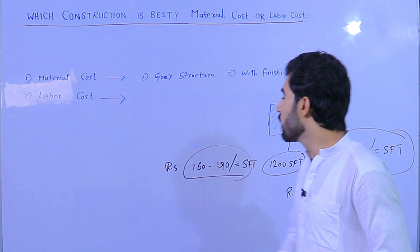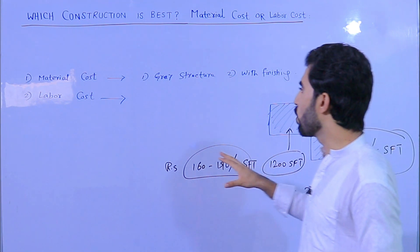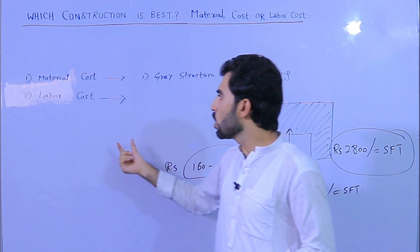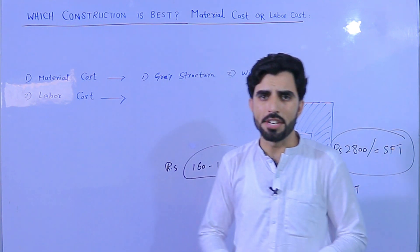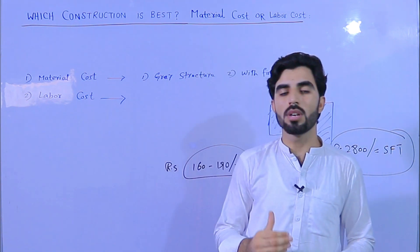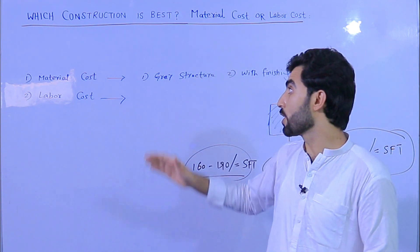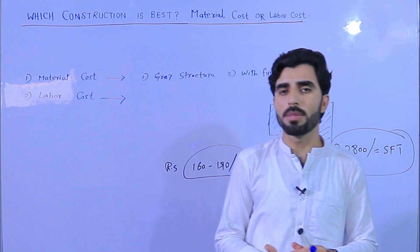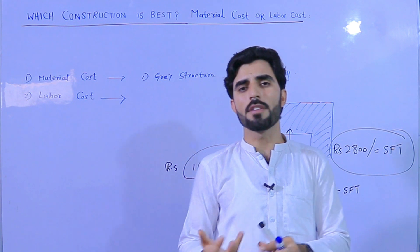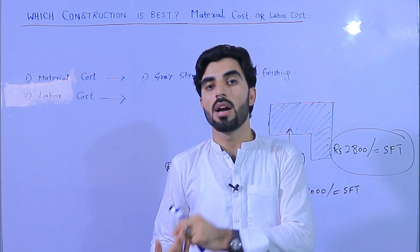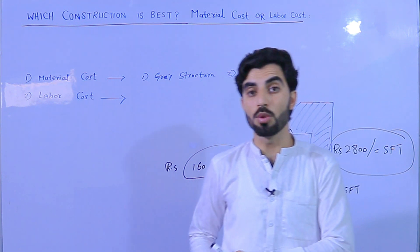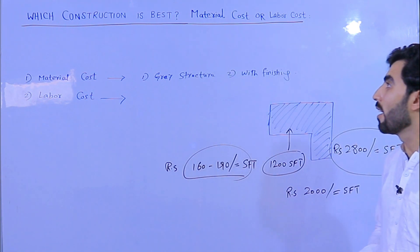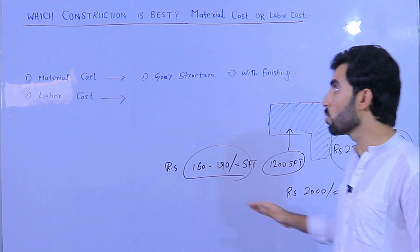You can decide very easily which is best. Also remember: in labor cost you have more flexibility, but in material cost when you make a decision they deliver either the full gray structure or with finishing. In labor cost, you can start from the foundation to ground level as stage one, second stage brick masonry, third stage RCC work, and fourth stage finishing work.